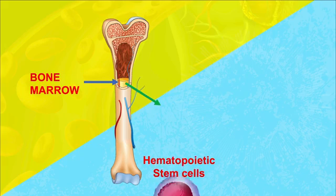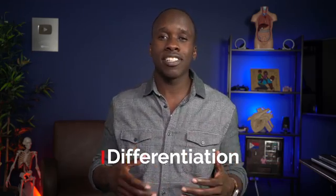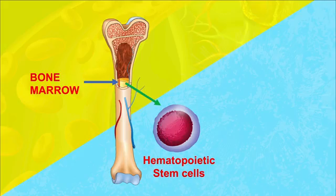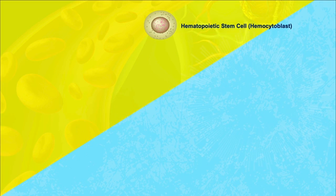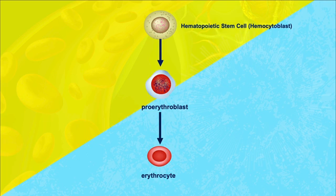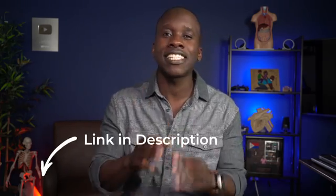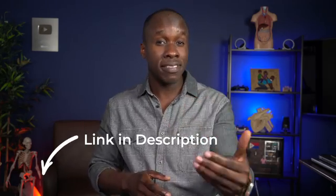In the bone marrow, we have cells called hematopoietic stem cells. These are cells that can become other types of cells through a process called differentiation. When you add the word hematopoietic, that tells us that these stem cells differentiate into different types of blood cells. In terms of the red blood cells, the hematopoietic stem cells first differentiate into proerythroblasts, which then develop further into mature red blood cells, aka erythrocytes. If any of that seems unclear, check out my video on hematopoiesis — but not now. Wait until this video is done.